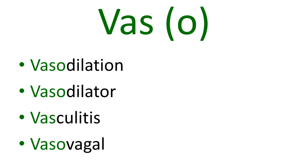Vasculitis refers to inflammation of blood vessels. This can be infective, but very often vasculitis is an autoimmune disease where the body's immune system attacks its own tissues, causing blood vessels to swell and narrow. For example, giant cell or temporal arteritis is inflammation of the arteries in the temporal area, causing aching at the side of the head, pain in masticatory muscles when eating, or double vision. It can be associated with polymyalgia and usually responds well to steroids. The word has vas- as a prefix and -itis as a suffix, indicating vascular inflammation.